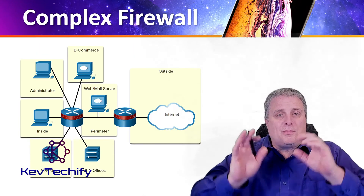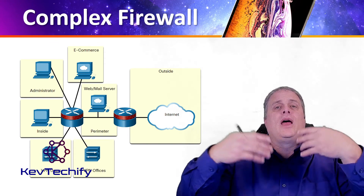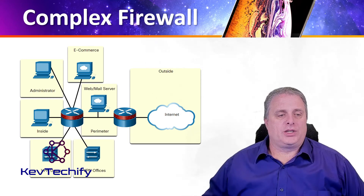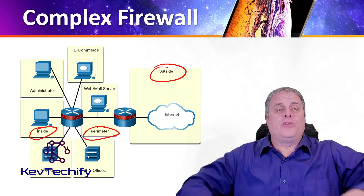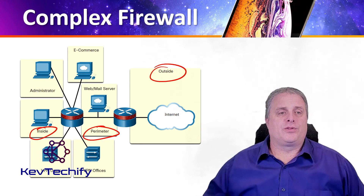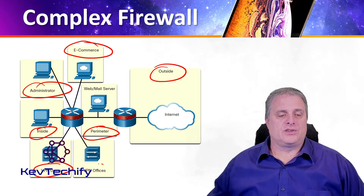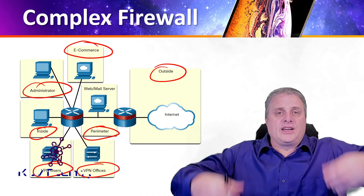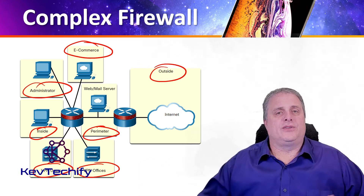Now that we have the baseline zone-based policy firewall network set up, we can make it more complex by adding more zones. We have the traditional inside, perimeter, and outside networks, but we can separate things out even further by creating additional zones such as an e-commerce zone, an administrator zone, VPN users, and VPN offices. For all of these zones, we can create different rules of access between them.